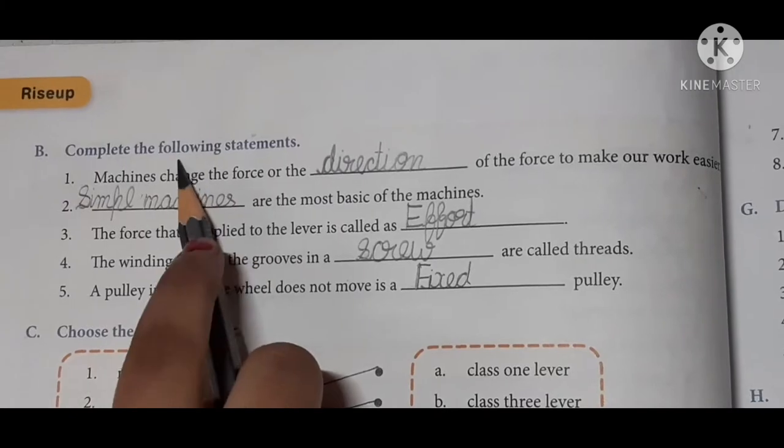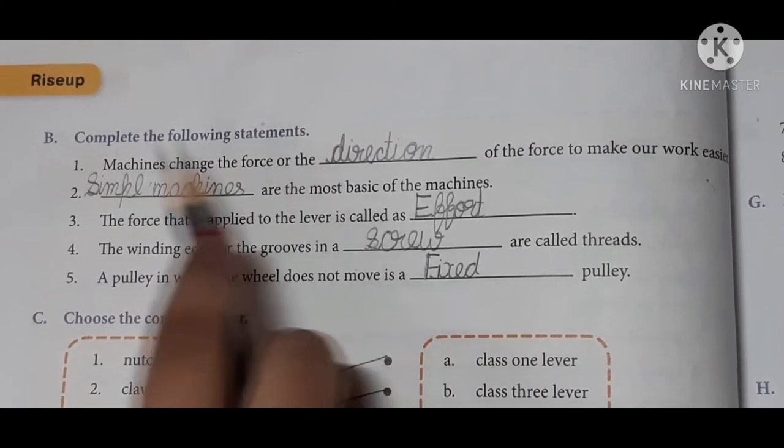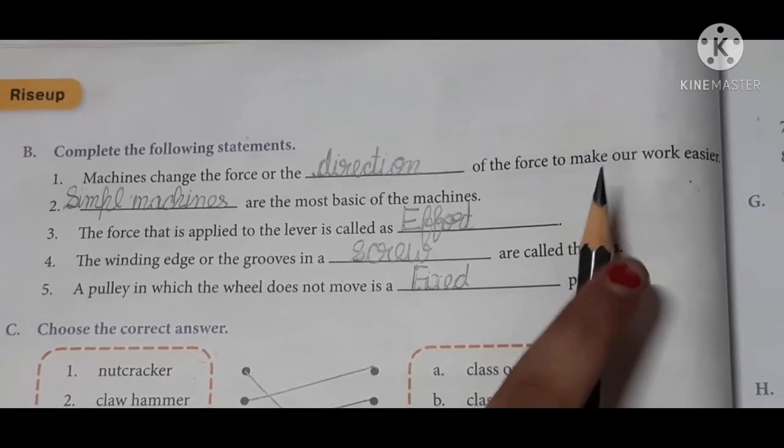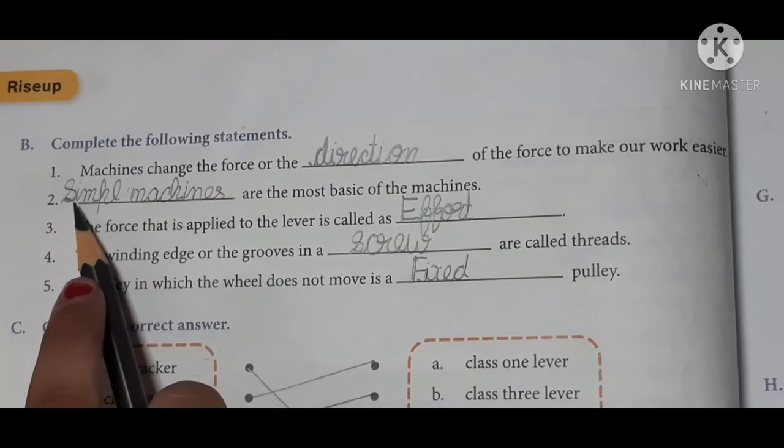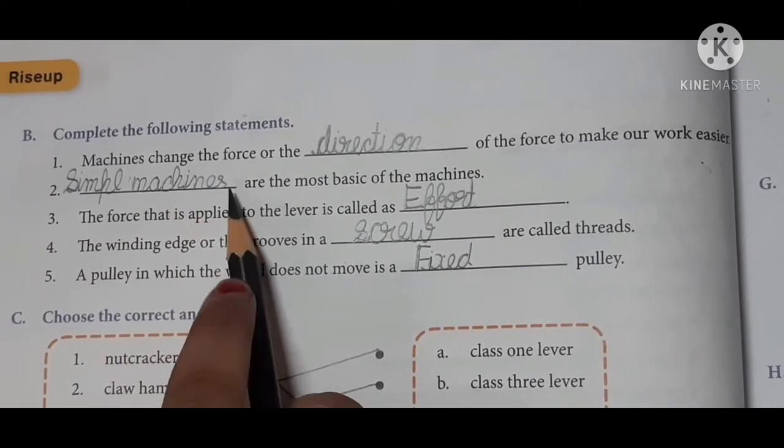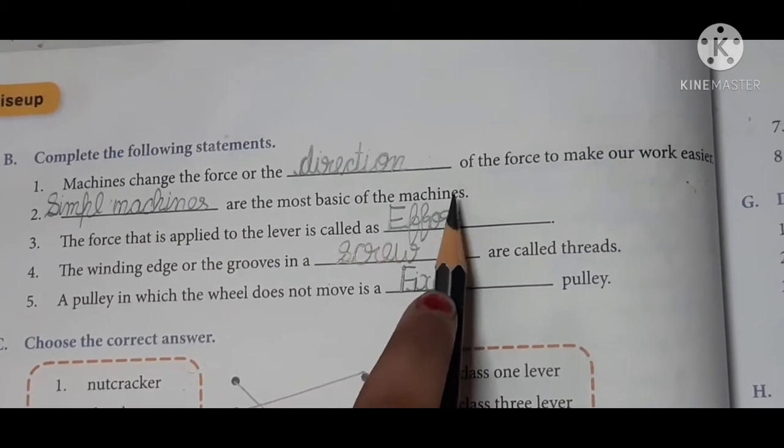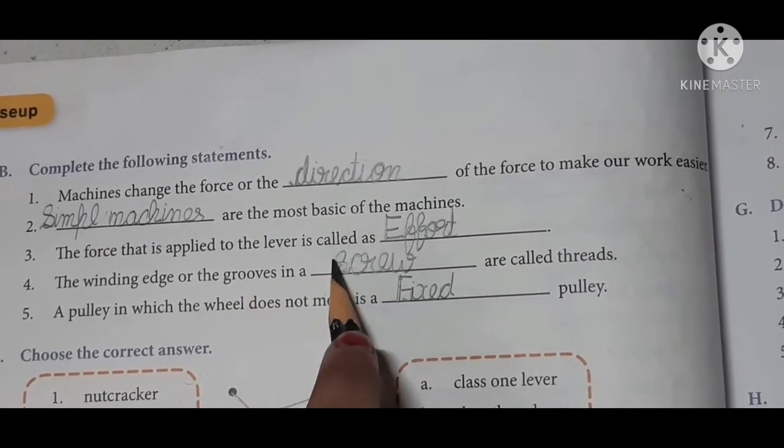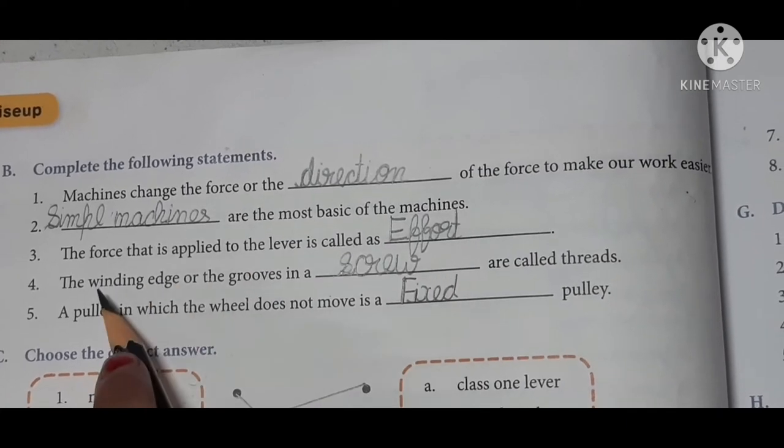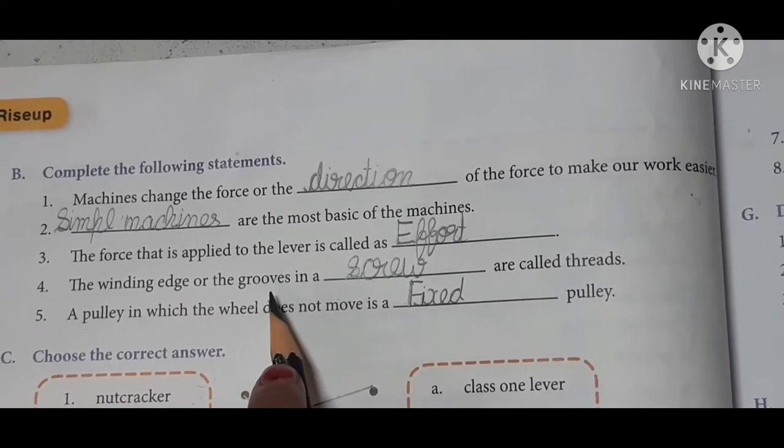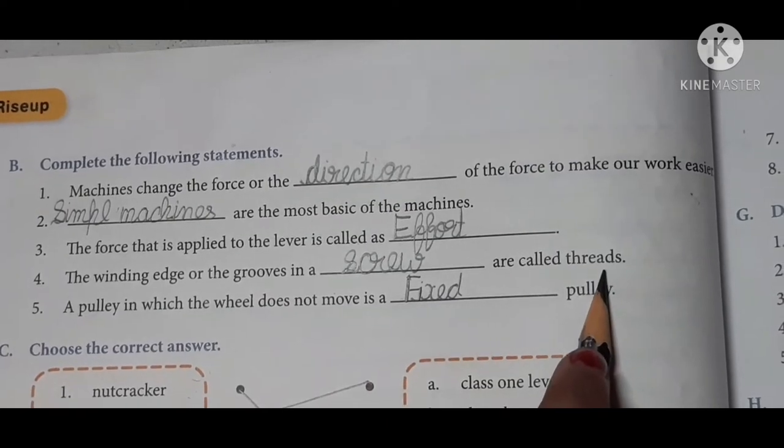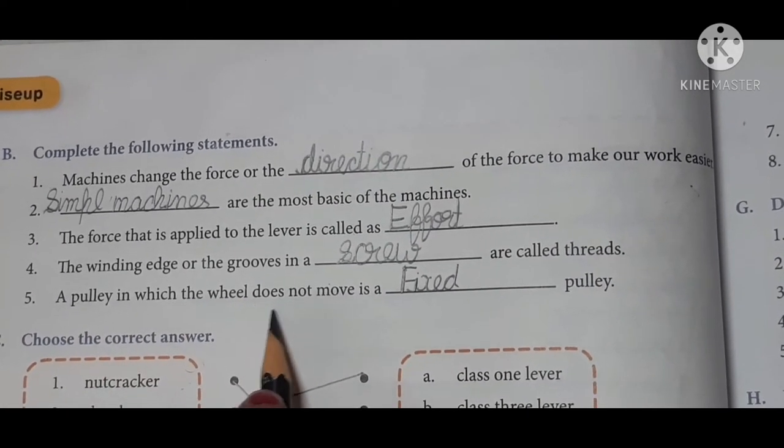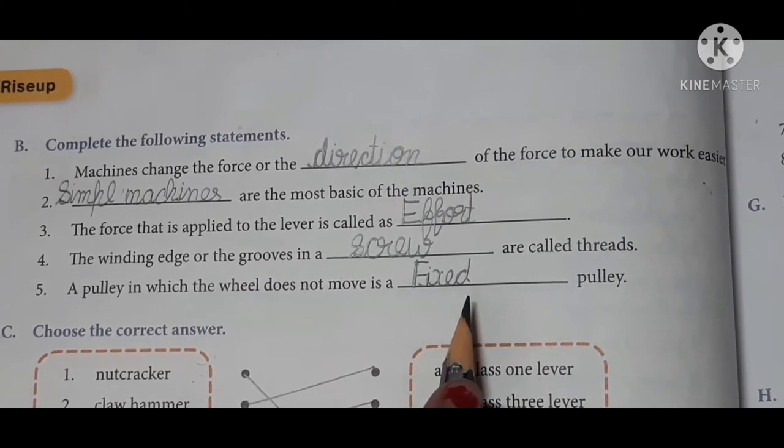Exercise B. Complete the following statements. First, machines change the force or the direction of the force to make our work easier. Second, simple machines are the most basic of the machines. Third, the force that is applied to the lever is called effort. Fourth, the winding edge or the grooves in a screw are called threads. Fifth, a pulley in which the wheel does not move is a fixed pulley.